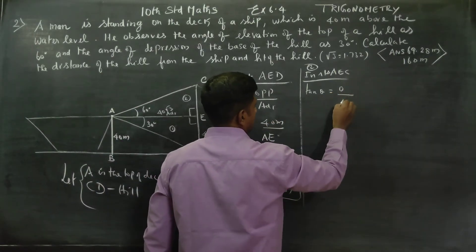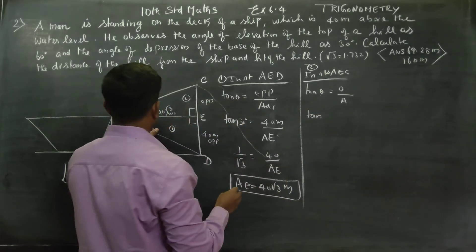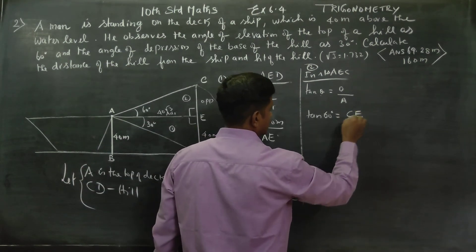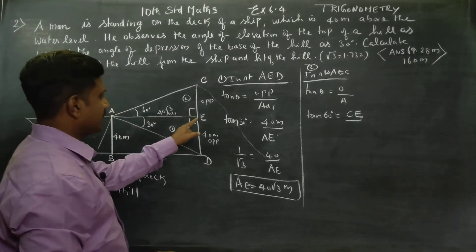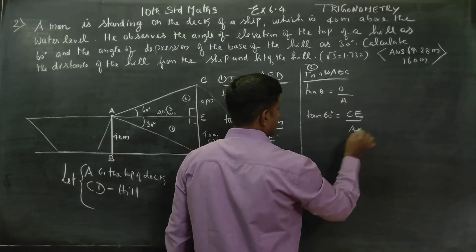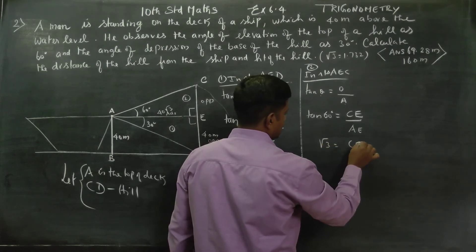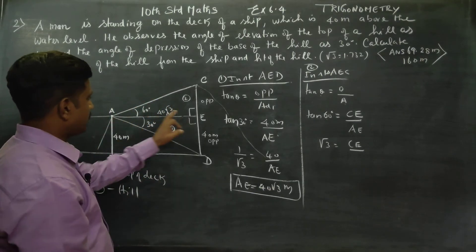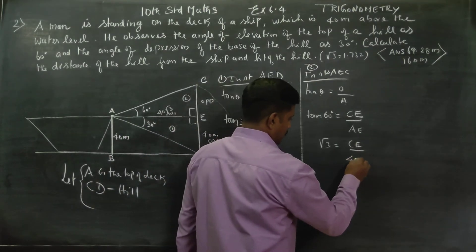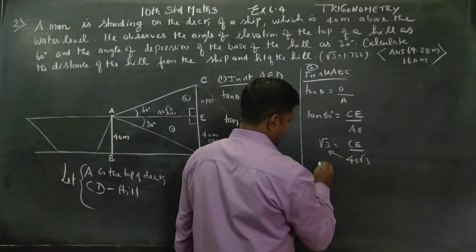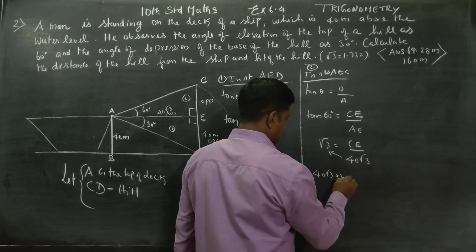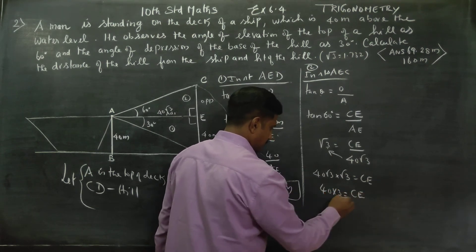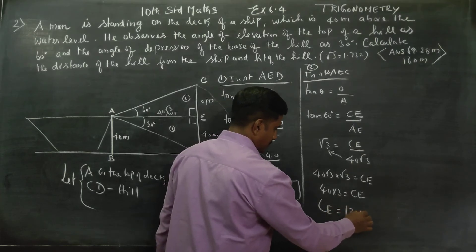CE is the adjacent side. AE is the adjacent side, which we just found to be 40 root 3. Tan 60 equals root 3, so CE over AE gives CE over 40 root 3 equals root 3. Cross multiplying, 40 root 3 into root 3 — root 3 times root 3 is 3 — so 40 into 3 equals CE. CE is equal to 120 meters.